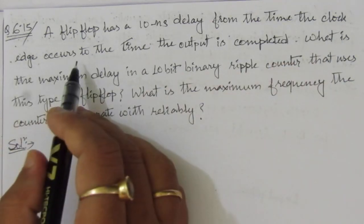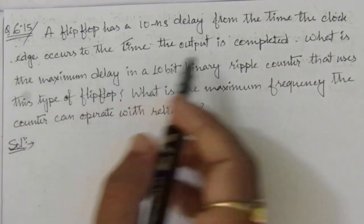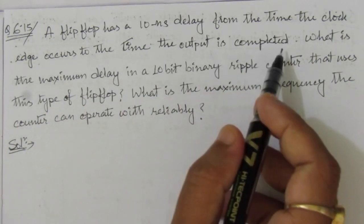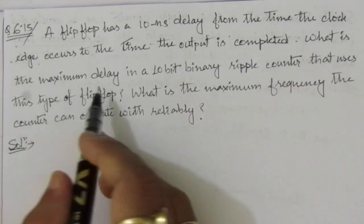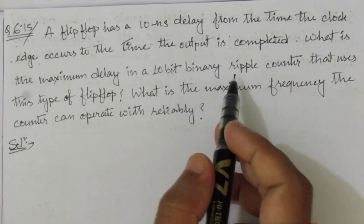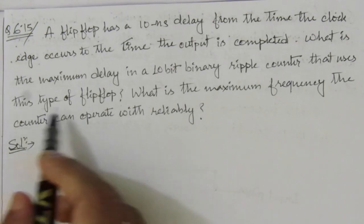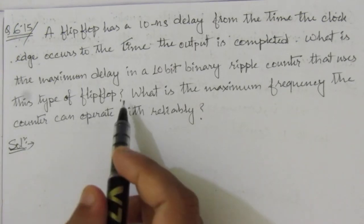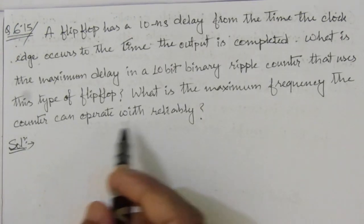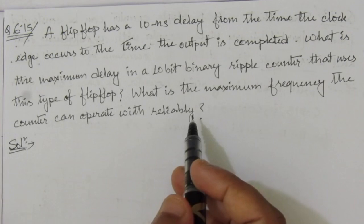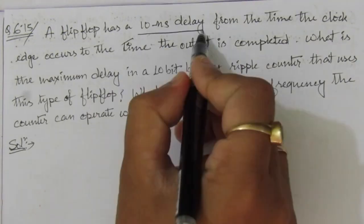The problem is: a flip-flop has a 10 nanosecond delay from the time the clock edge occurs to the time the output is completed. What is the maximum delay in a 10-bit binary ripple counter that uses this type of flip-flop? What is the maximum frequency at which the counter can operate reliably?